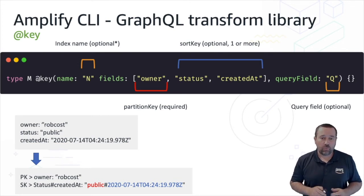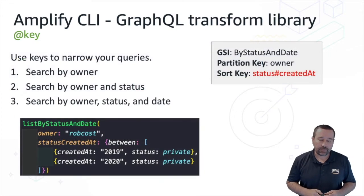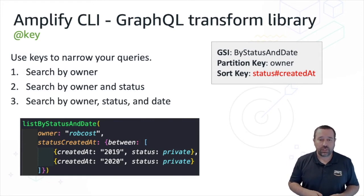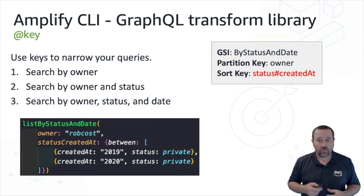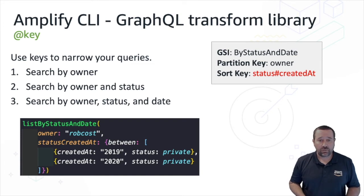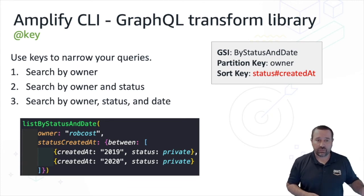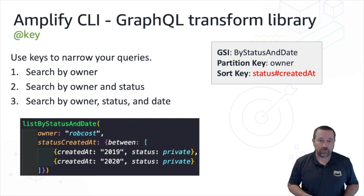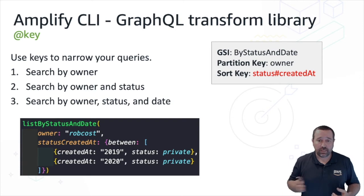Why would we want more than two fields in a global secondary index? In that previous example, I had the owner, status, and created-at fields as part of that global secondary index. This allows us to create different combinations of queries — more granular queries we can run from our client. Based on those fields, we could search by owner, by owner and status, or by owner, status, and created date. This allows more flexible and robust querying from our client and ensures those queries are optimized on our back end so that we don't transfer large amounts of data over the wire or do lots of client-side filtering.